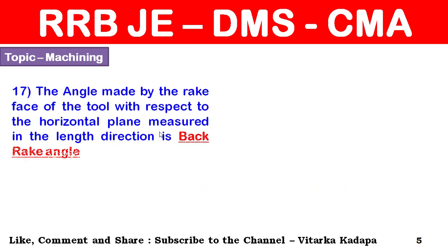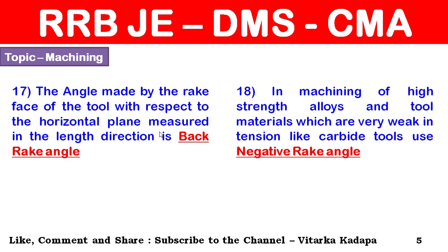The angle made by the rake face of the tool with respect to the horizontal plane, measured in the length direction, is the back rake angle. In machining of high strength alloys, and for tool materials which are weak in tension like carbide tools, a negative rake angle is used.